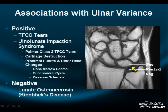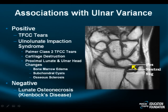One may see subchondral cysts, erosions, and especially an OCD — or osteochondral defect — with inflammation and synovitis: all valuable, sensitive, yet indirect signs that the positive variance is having a negative effect.